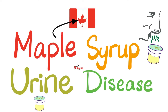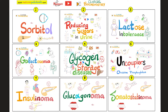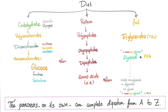Please watch the videos in this clinical biochemistry playlist in order. Diet is carbohydrate, protein, and fat. We talked about the disorders of carbohydrate metabolism. Now we're here — protein and amino acid metabolic disorders. After this, we'll talk about fat.